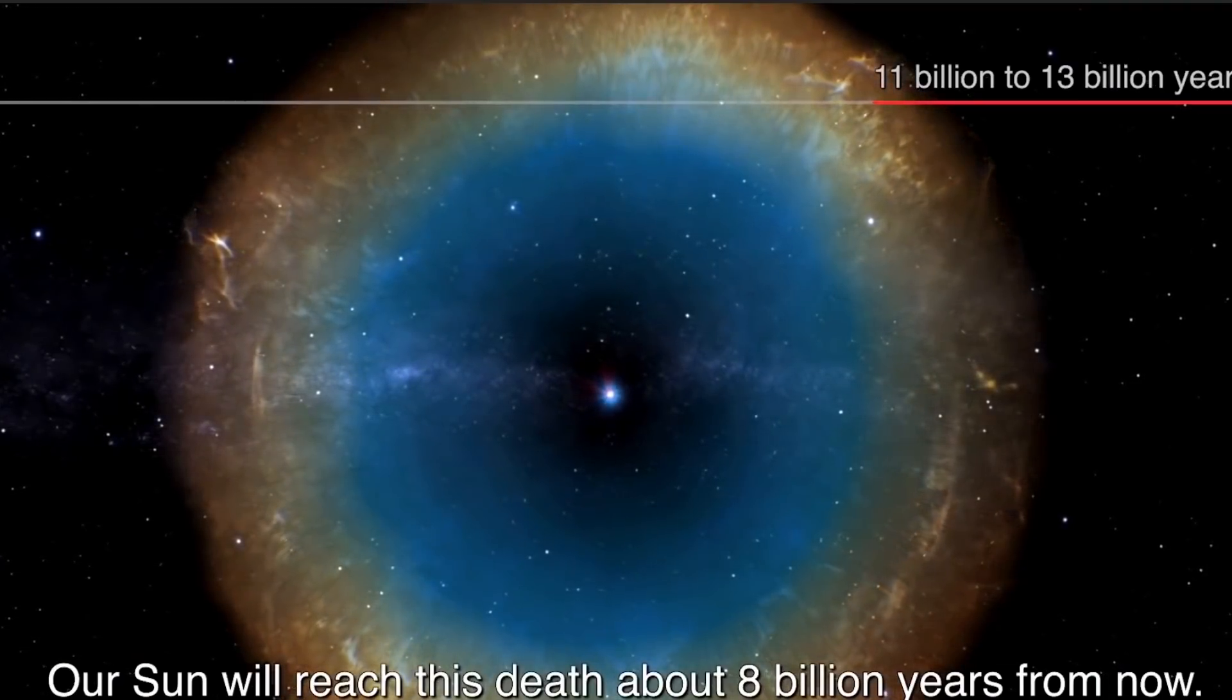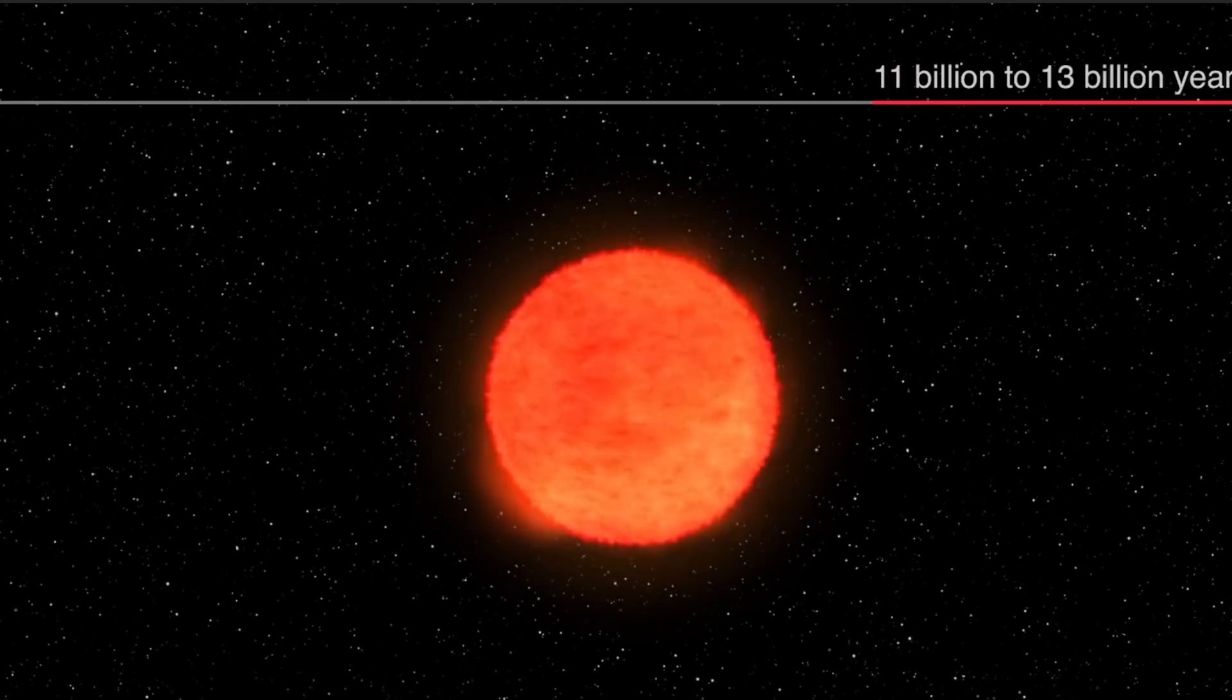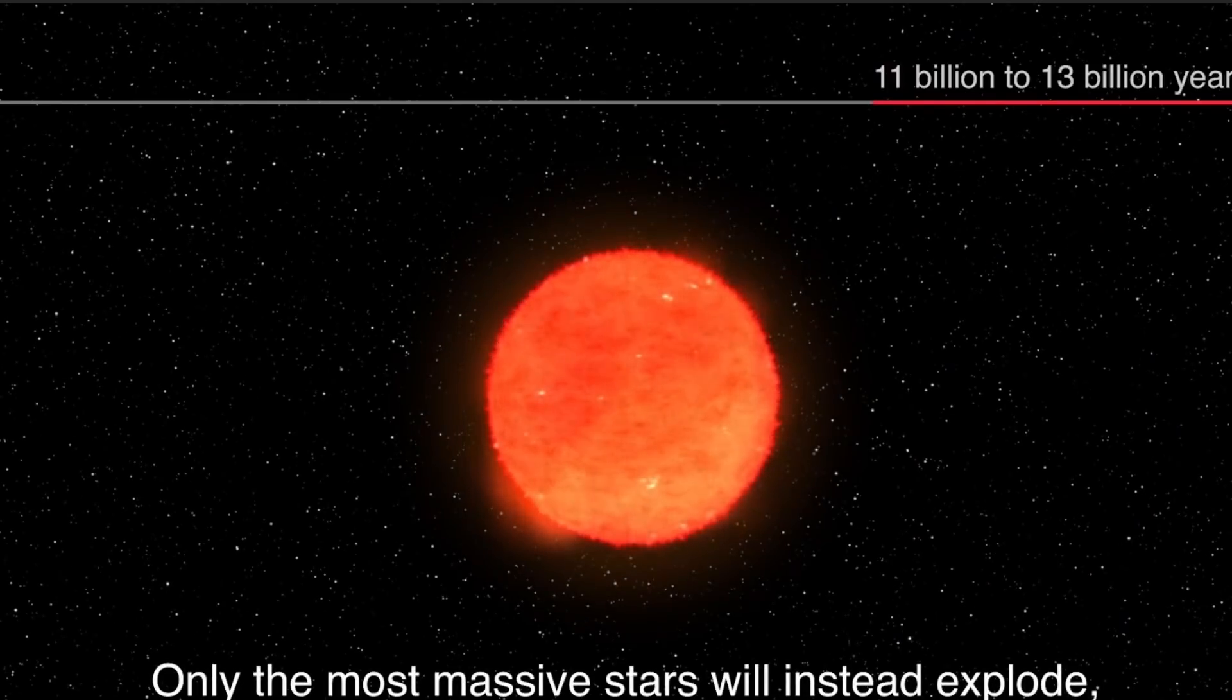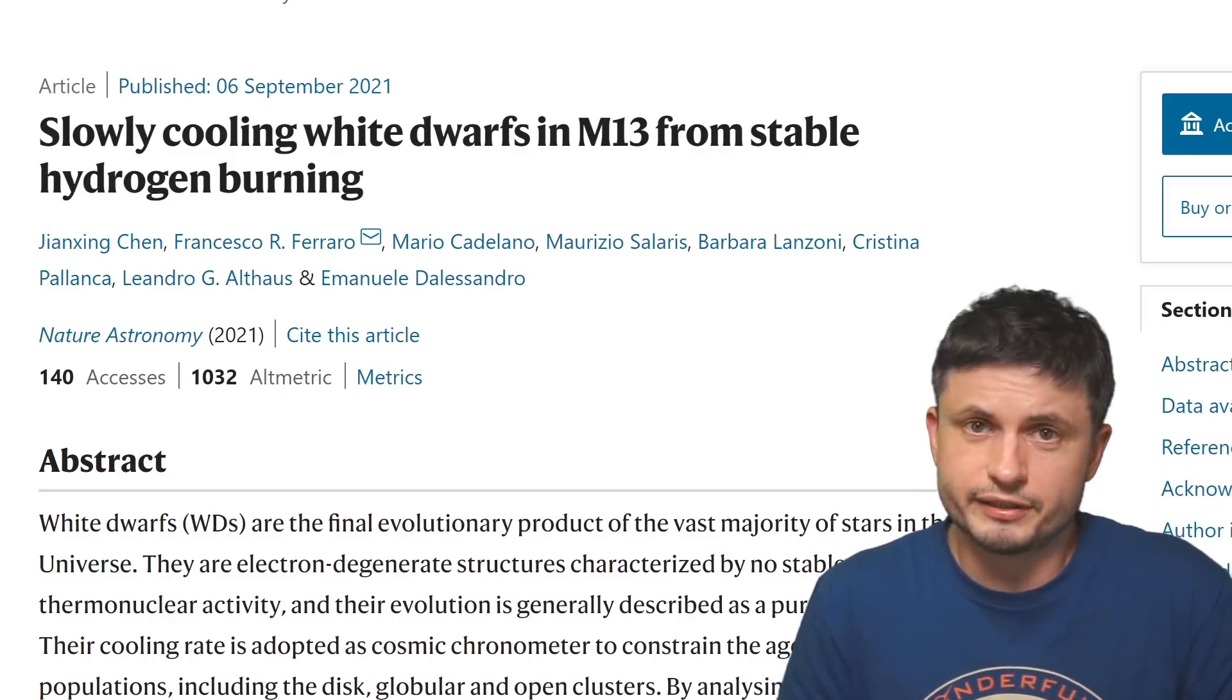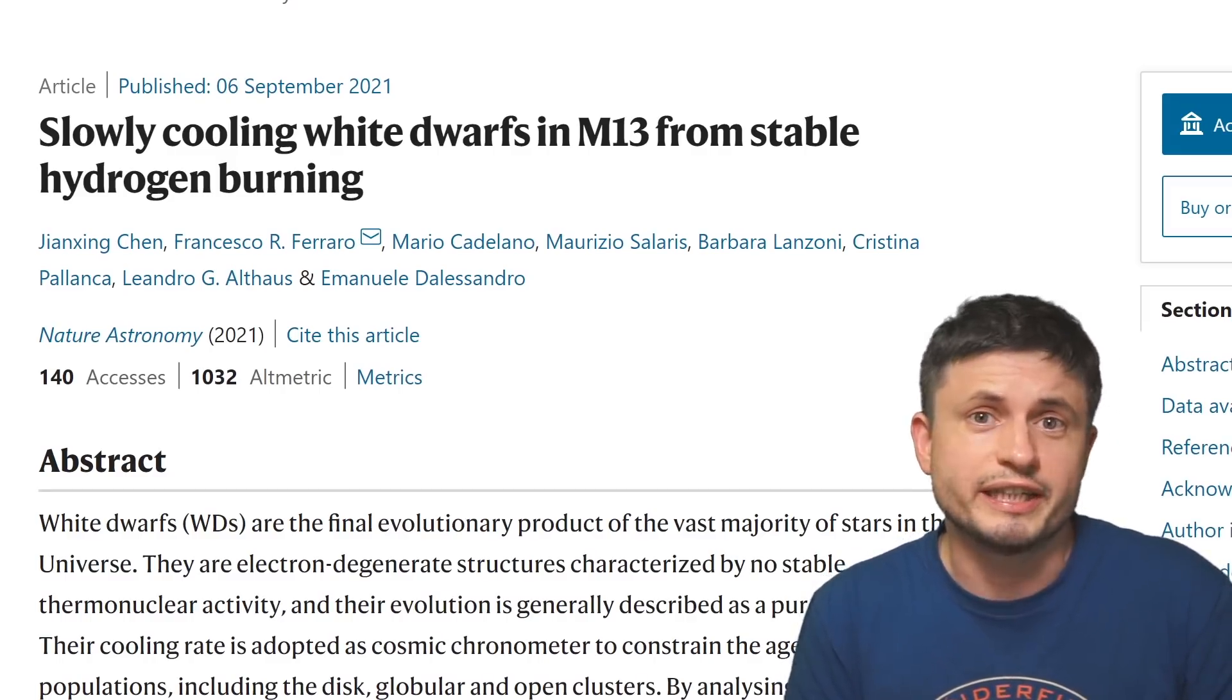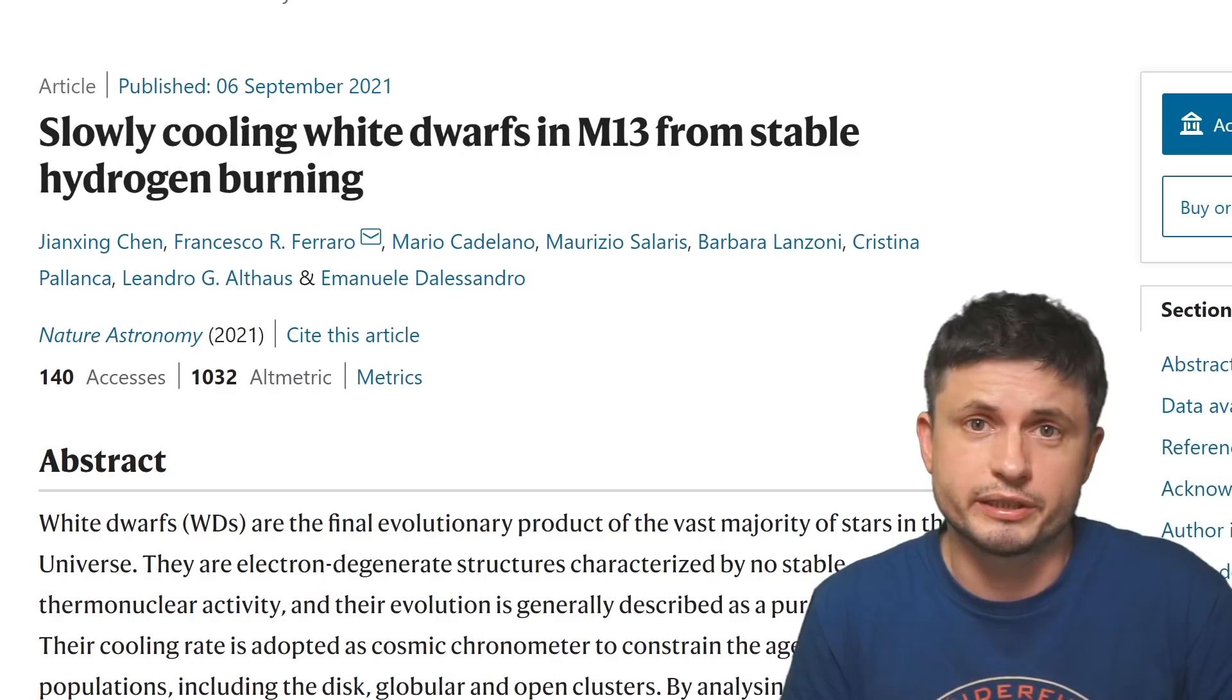Mostly because the new study has actually determined that certain white dwarfs do not age in the same way, and so even though previously some of these objects have been used to measure the age of various global clusters in the galaxy, this new study suggests that there is a possibility a lot of mistakes have been made in the past when measuring their ages. So let's discuss this in more detail.